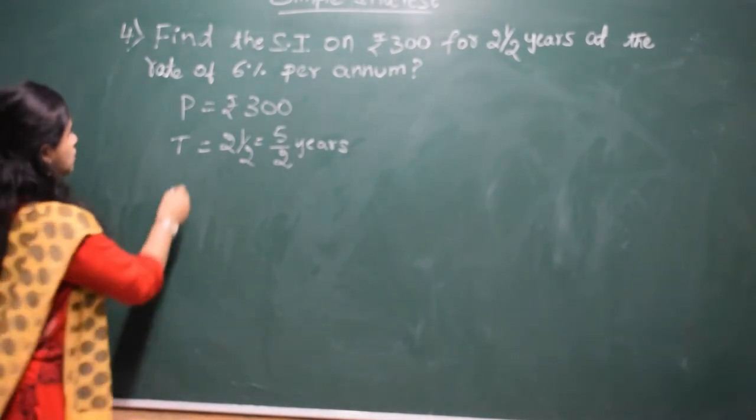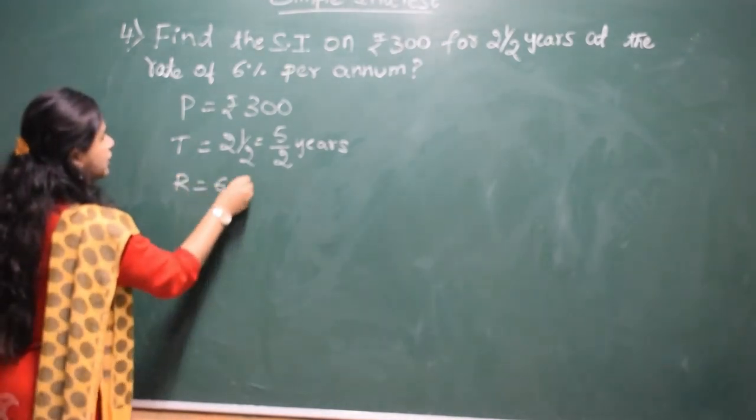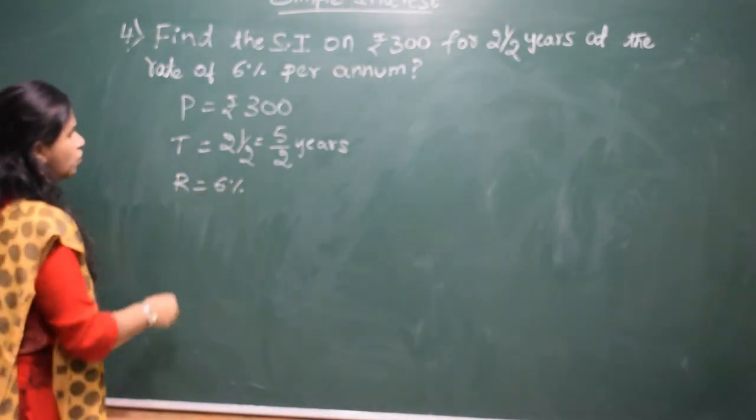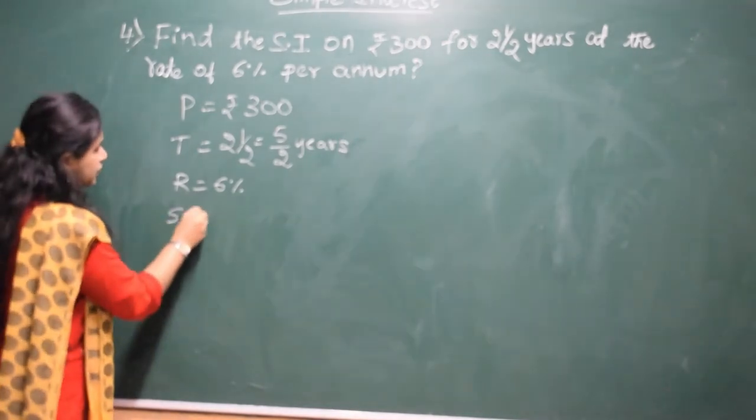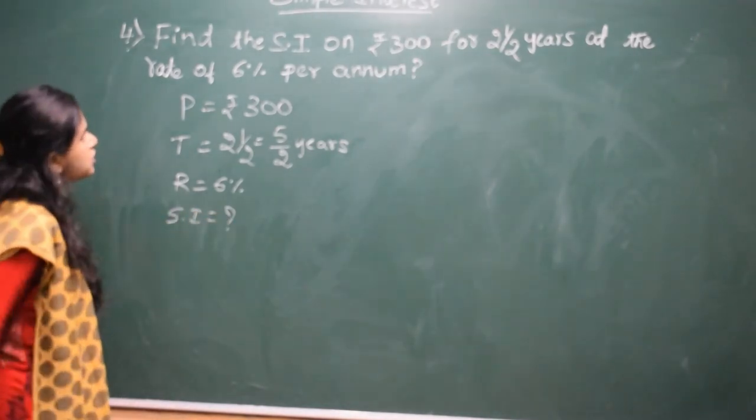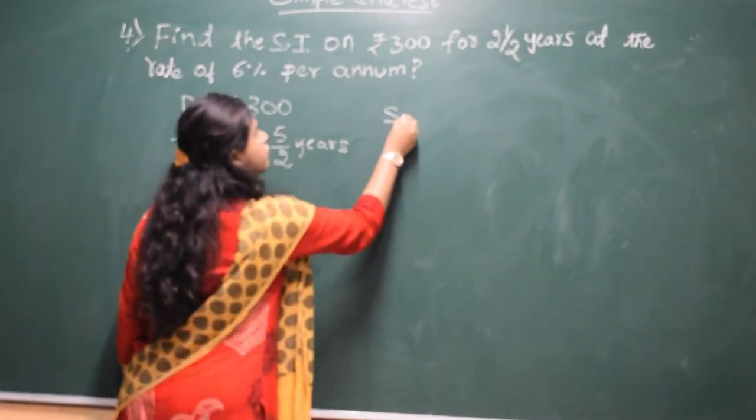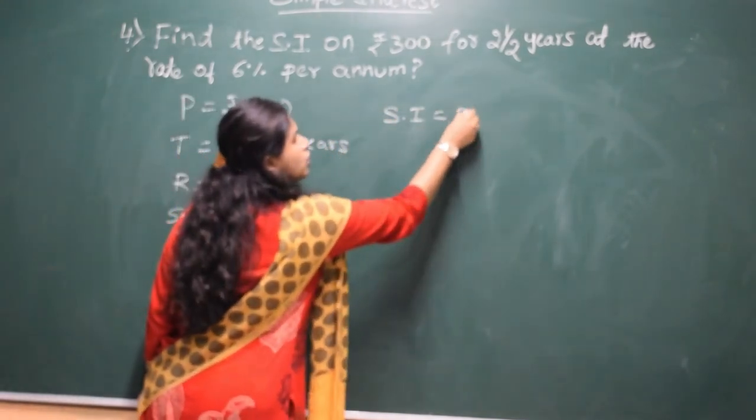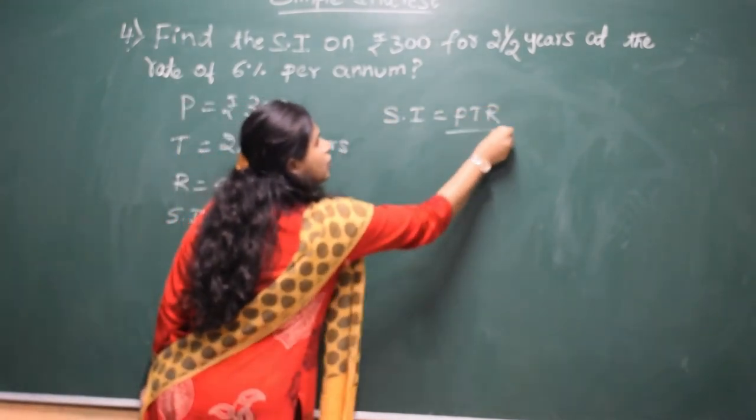Next, we have the given rate. Rate is 6%. Now, we have to find the simple interest. Simple interest is equal to, you know the formula, simple interest is equal to PTR by 100.